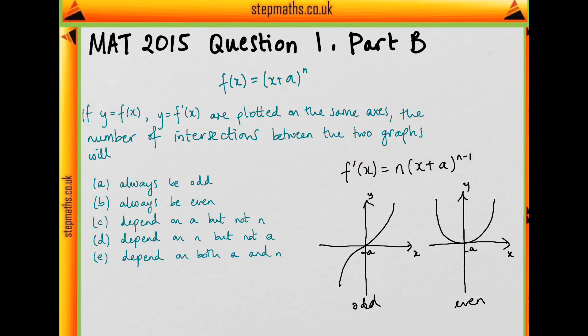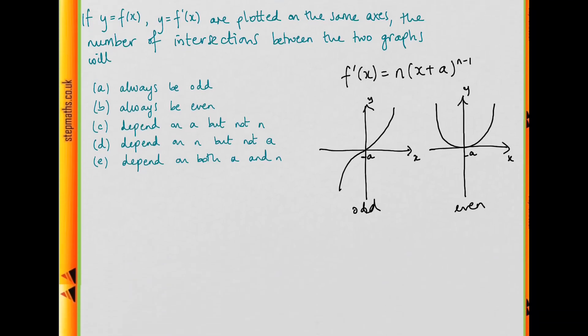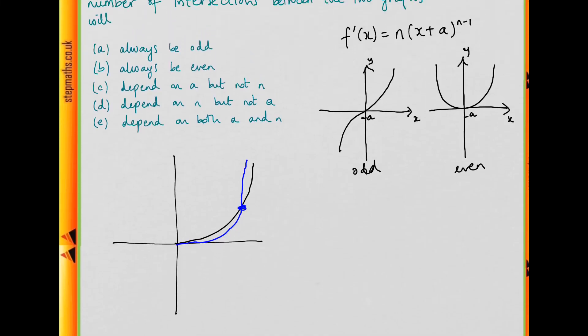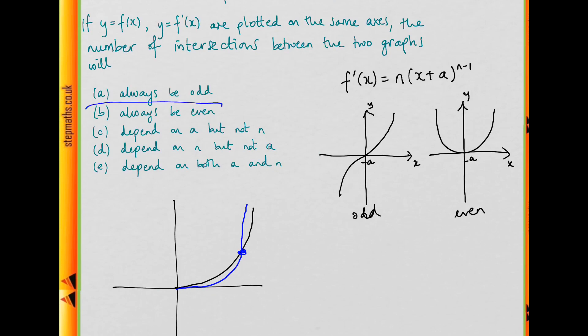So it's going to be something like this. So let's say here is our graph. So if this is f dashed, then f is going to start off being smaller, then eventually it's going to be much bigger. Sorry, that's very badly drawn. But you can see that there's going to be another intersection. So the answer is b, the number of intersections will always be even.